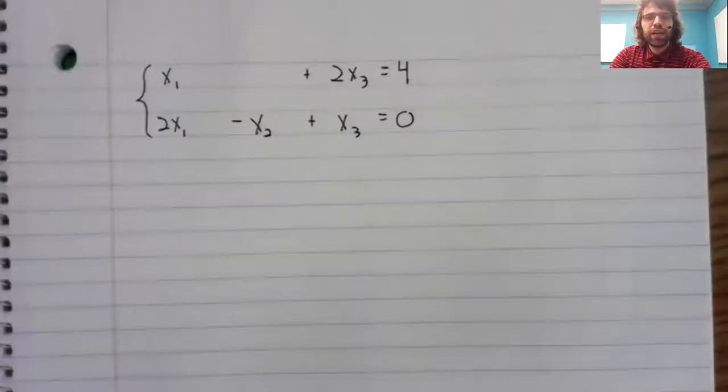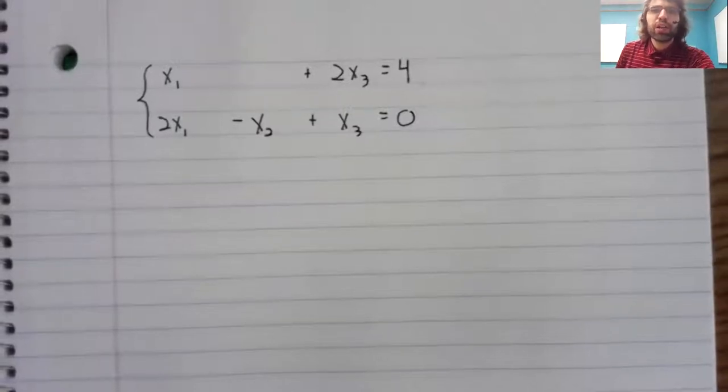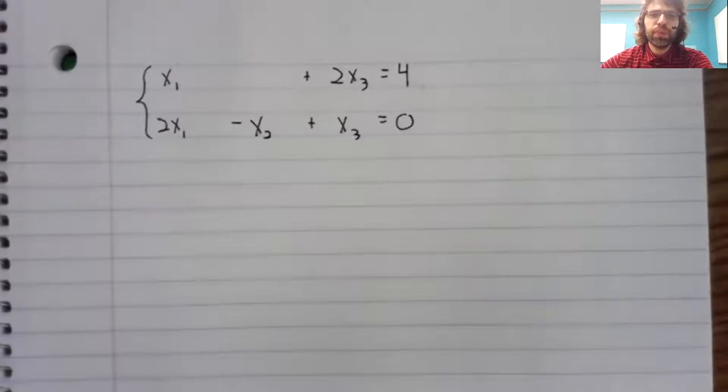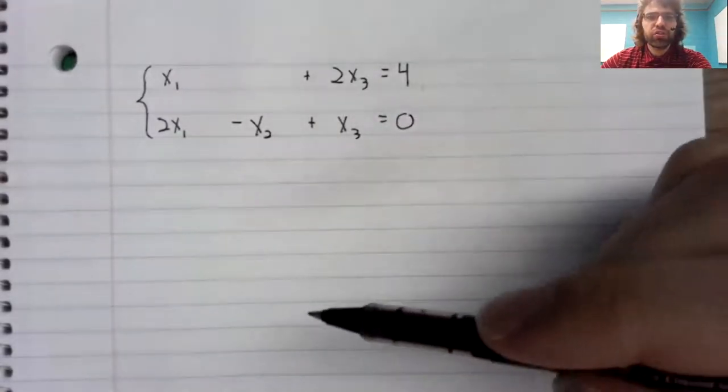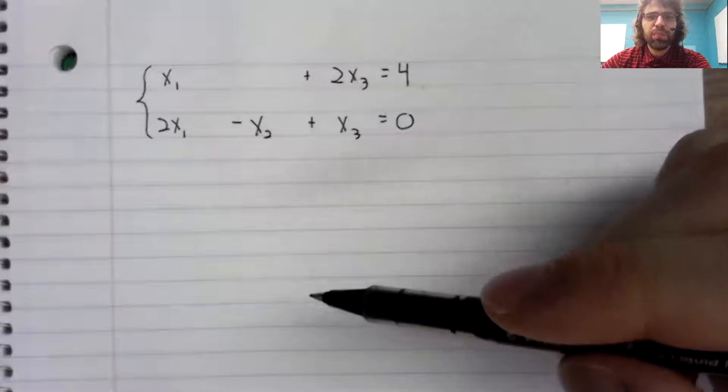Suppose that we have a system of linear equations. The example I'm working with here has two equations and three variables. We're going to take this and store it as a matrix.